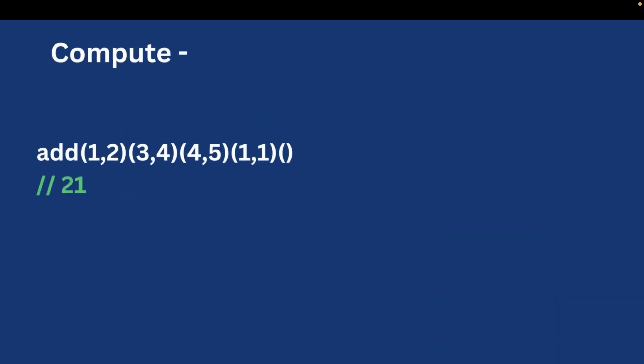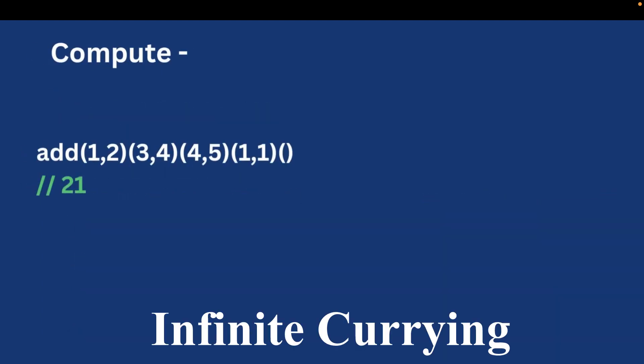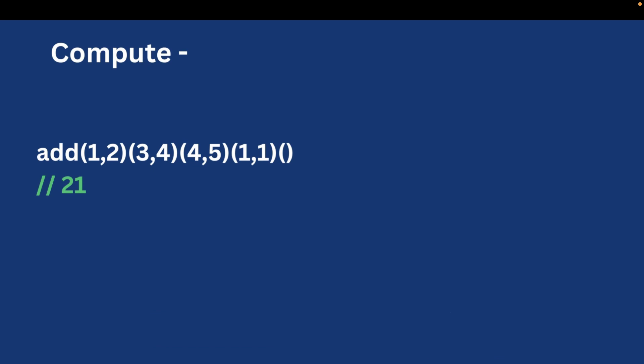Here is an important variation — an infinite currying example. The interviewer gave us two arguments inside each set of parentheses: add(1,2)(3,4)...(m,n), and we have to compute its result. I would suggest you pause the video and think about the solution.